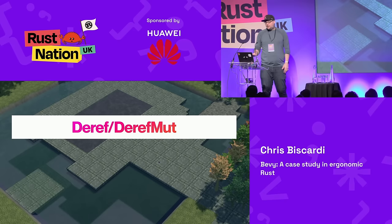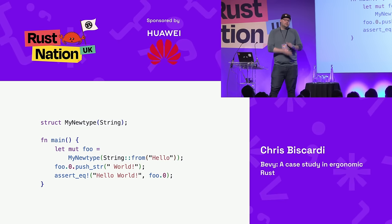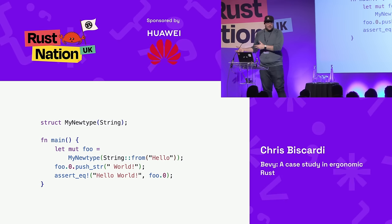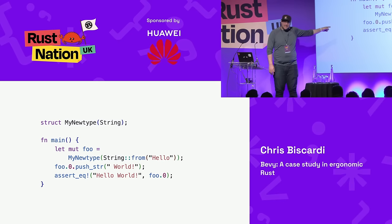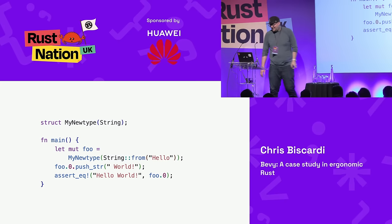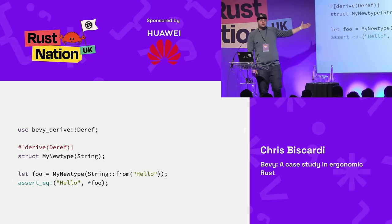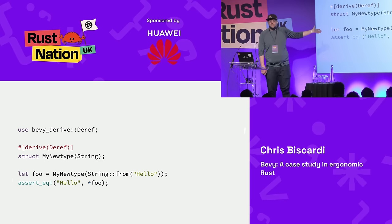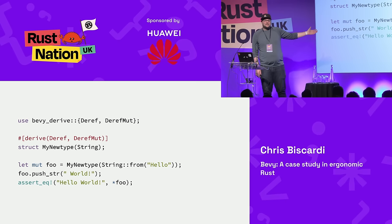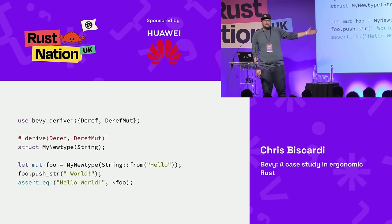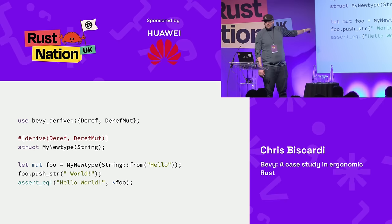Let's talk about a couple of smaller traits — Deref and DerefMut. Bevy only allows one instance of a component per entity, so if you insert an F32 you can't have any other F32s — hence new types. Wrap your F32 in a struct. Unfortunately you end up with this `.0` syntax everywhere. Bevy includes derives for Deref so that dot-zero goes away — it's a nice quality-of-life improvement. DerefMut is also in Bevy, for mutable cases. No more syntactic eyesore.